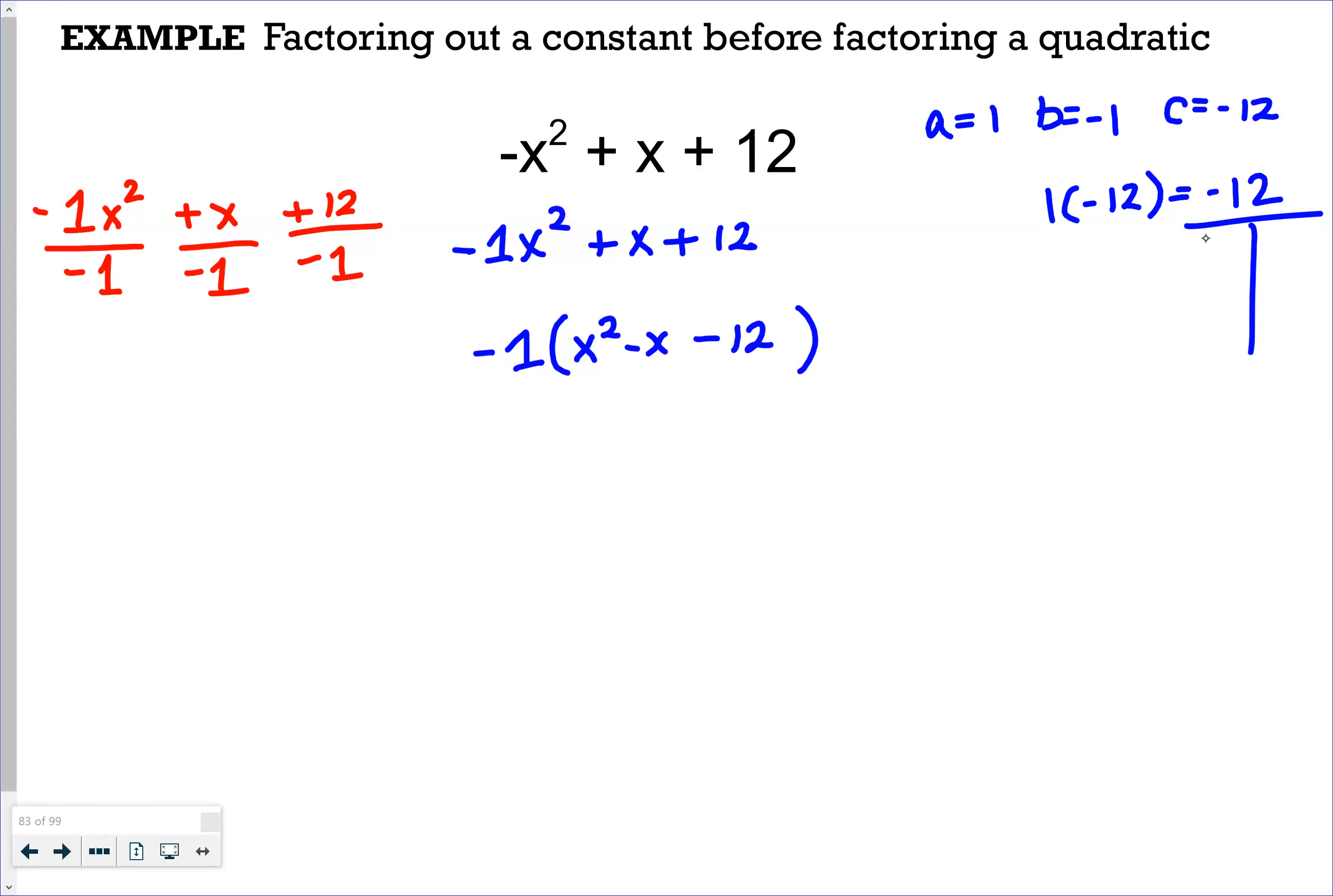Let's see, would -3 and 4 work? That gives me -12, but when I add them I get positive 1. So how about 3 and -4? That's our winner. 3 times -4 equals -12.